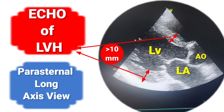Normal thickness of interventricular septum and posterior wall is 6 mm to 10 mm. If more than 11 to 12 mm, then mild LVH, and more than 13 to 15 mm, then moderate LVH.